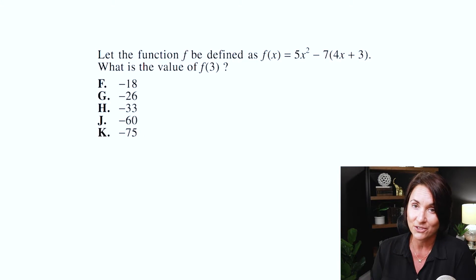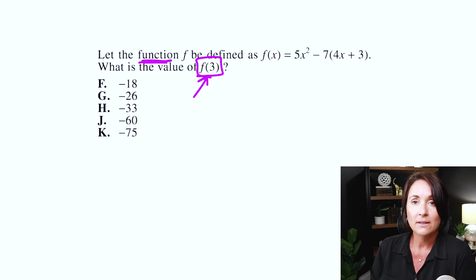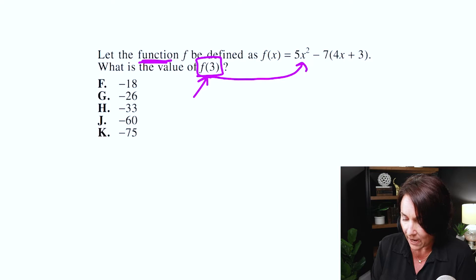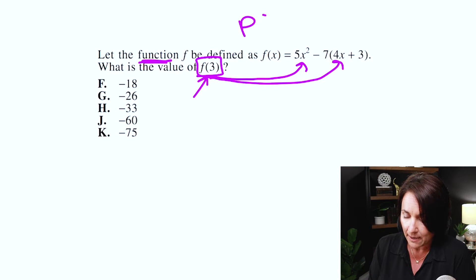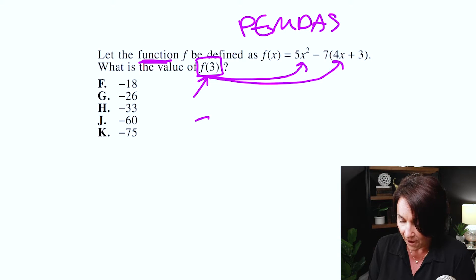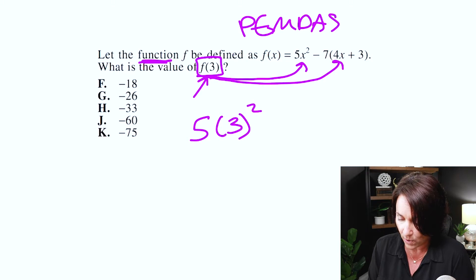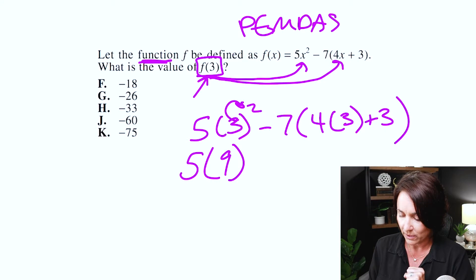Our next problem is a function, and people tend to totally freak out when they see the word 'function' or f(x) in a problem. This is super easy. All you're doing is: let the function f be defined as f(x), and then it gives you f(3). All you have to do is plug that 3 in wherever you see an x. I'm going to rewrite the problem with 3 instead of x, and I'm going to be really careful to use my PEMDAS when solving. So here we go: 5 times x-squared becomes 5 times 3-squared, minus 7 times the quantity (4x plus 3) — so that x becomes 3 as well — giving us 5 times 3-squared minus 7 times (4 times 3 plus 3).